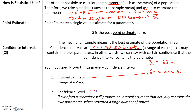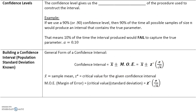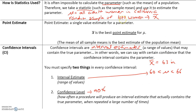A confidence level is how often the procedure will produce an interval estimate that actually contains the true parameter when repeated a large number of times. The confidence level gives us the success rate of the procedure used to construct the interval. For example, if we use a 90% confidence level, then 90% of all possible samples of size n would produce an interval that contains the true parameter.